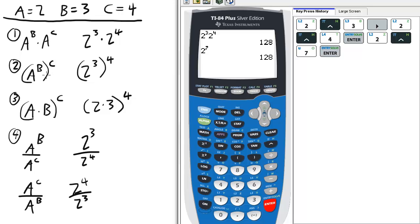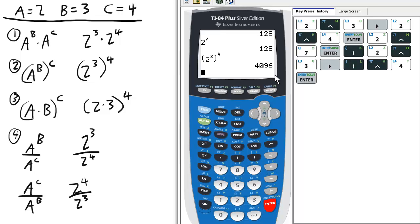Now next we have raising a power to a power. In this case in parentheses, we'll put 2 raised to the 3rd, scroll over one to close the parentheses, and then raise that expression to the 4th. So that's 4,096.